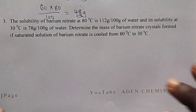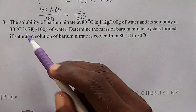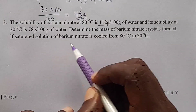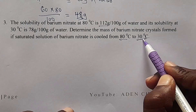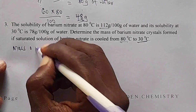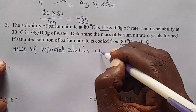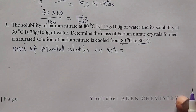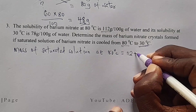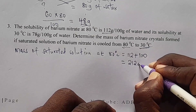Number 3: the solubility of barium nitrate at 80 degrees Celsius is 112 gram per 100 gram of water, and its solubility at 30 degrees Celsius is 78 gram per 100 gram of water. Determine the mass of barium nitrate crystals formed if a saturated solution is cooled from 80 degrees Celsius to 30 degrees Celsius. First, the mass of saturated solution at 80 degrees Celsius: 112 plus 100 gives 212 gram.